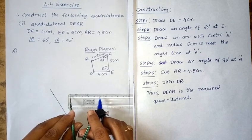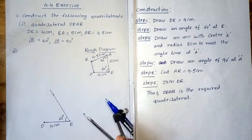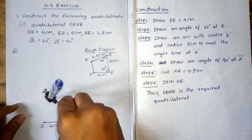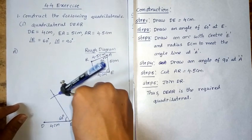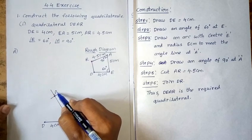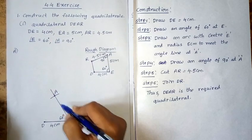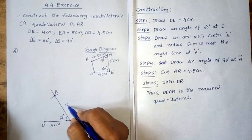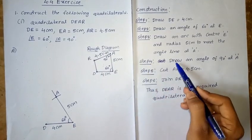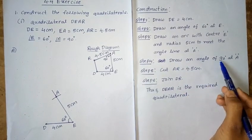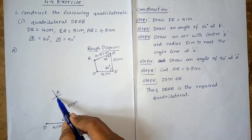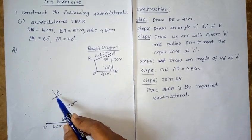This is length 5cm. The arc with center E and radius 5cm meets the angle line at point A, so EA equal to 5cm. Next, 4th step: draw an angle of 90 degrees at A. Place the protractor parallel to line EA and locate 90 degrees at point A.